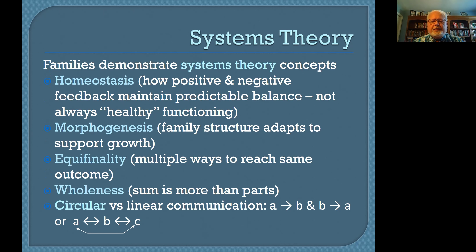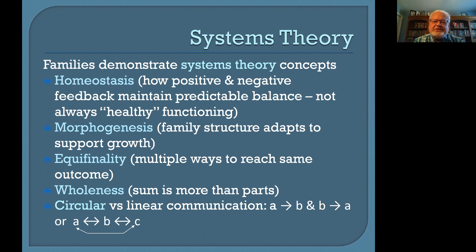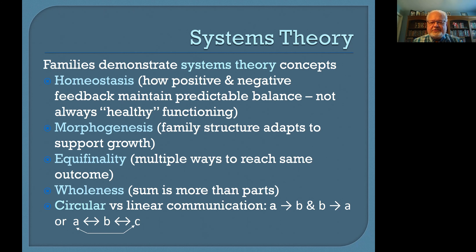Wholeness suggests that the sum is more than the parts, and this is particularly important when working with families, since they're more than just a collection of individual members. How they connect with one another, their structure, and their relationships are just as important as the individual characteristics of each member. Finally, circular versus linear communication is important. In linear communication, A influences B and C, and B influences C. But in families, there's a circularity — A influences B, but B also influences A; B influences C, but C influences B and A as well.